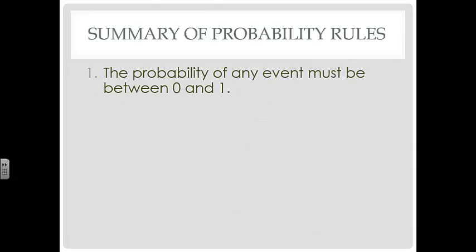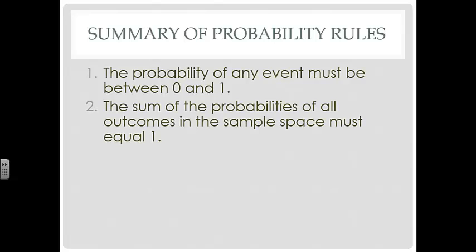All right. So let's remember our probability rules. Remember that any probability, or the probability of any event has to be between 0 and 1. The sum of all the probabilities of all the outcomes must equal 1.